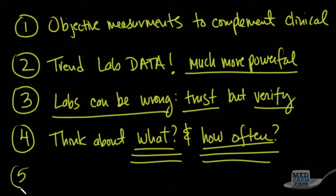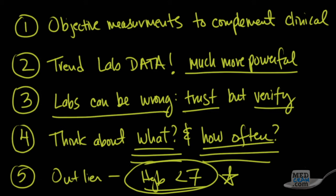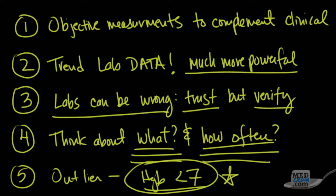And then you should probably, as a number five, think about your outliers. In other words, how low does something have to be or how high does something have to be before you're going to act on it? So for instance, a hemoglobin of less than seven is going to make you want to transfuse blood. Just make sure you put in an order for that so you get the call on that. Okay, thanks for joining us for this first video. We're going to jump in with CBC next video.